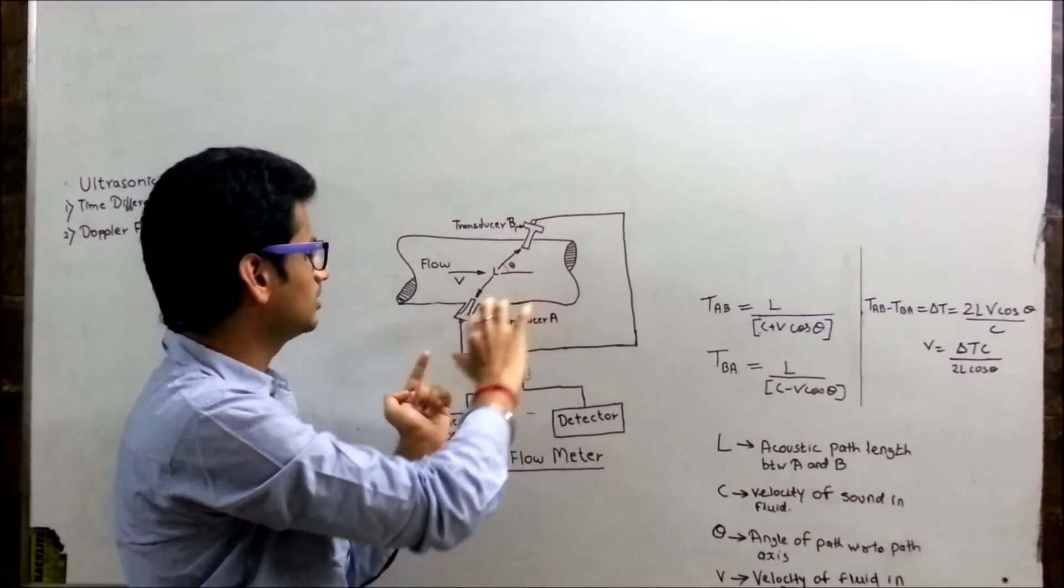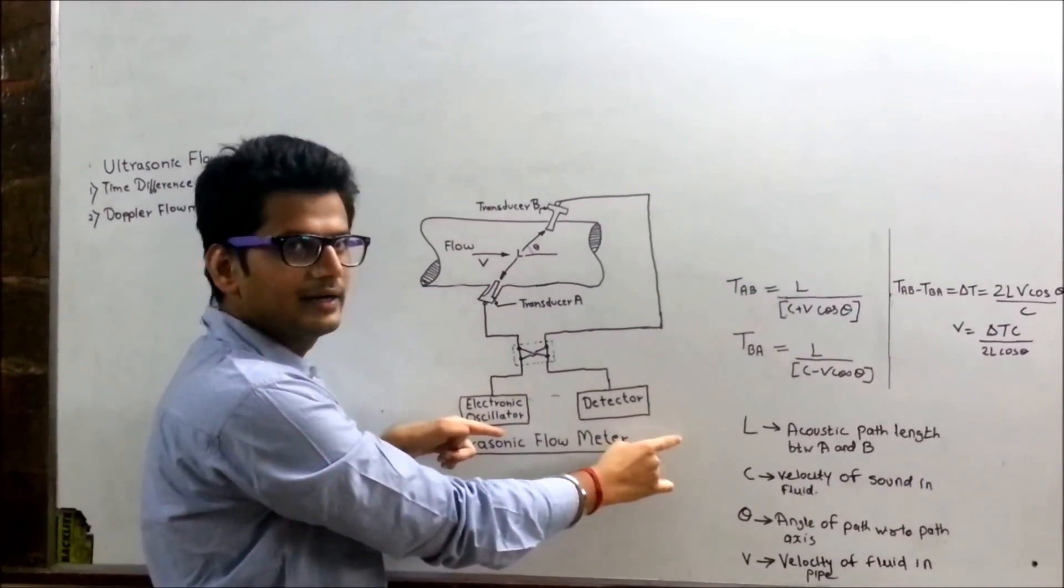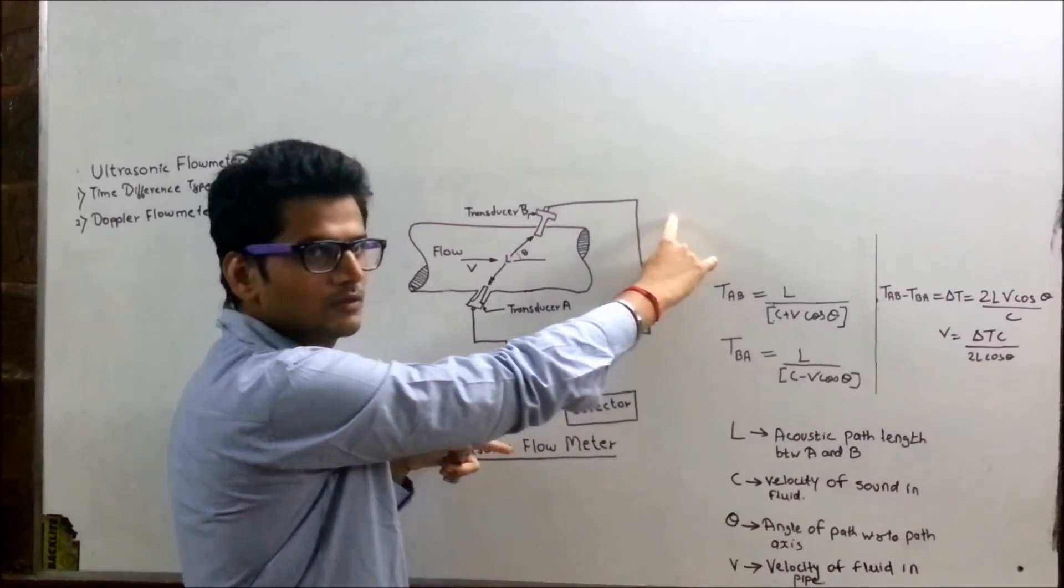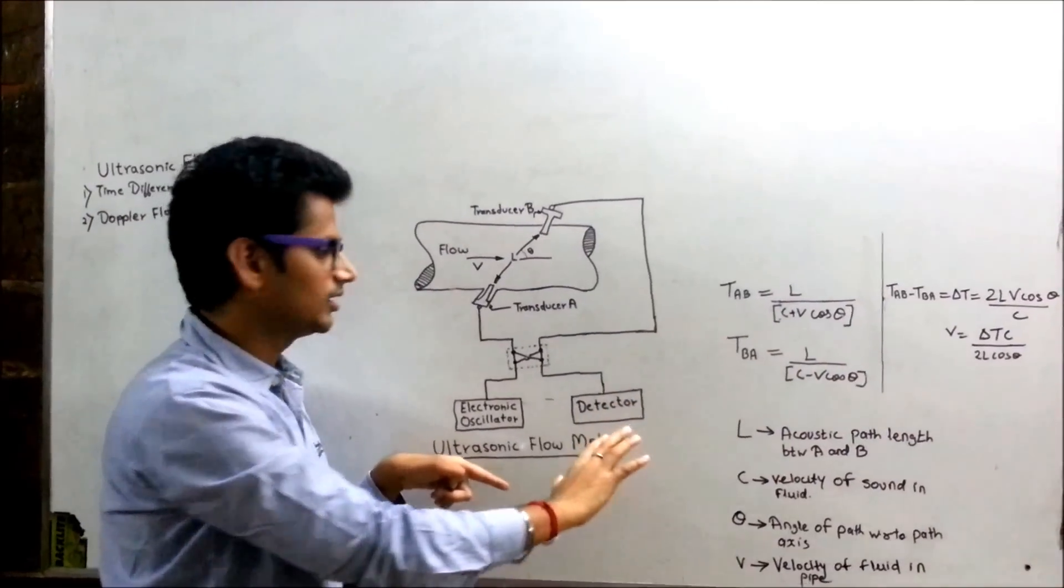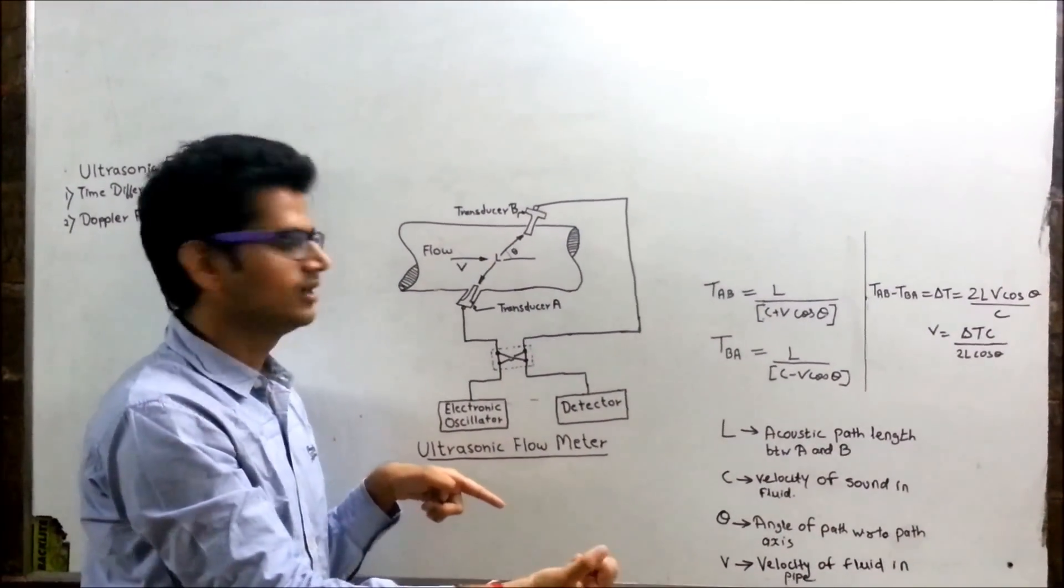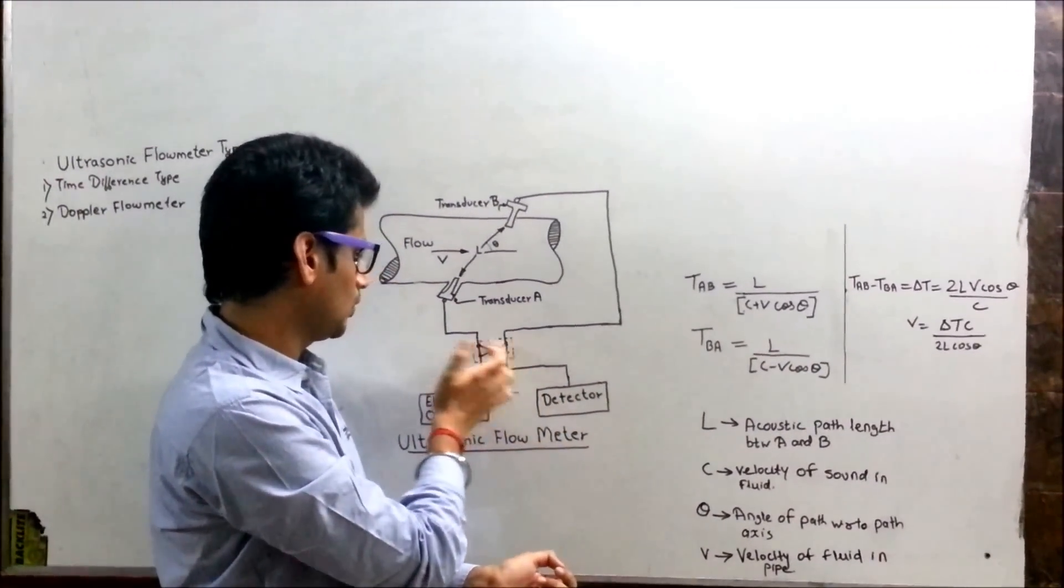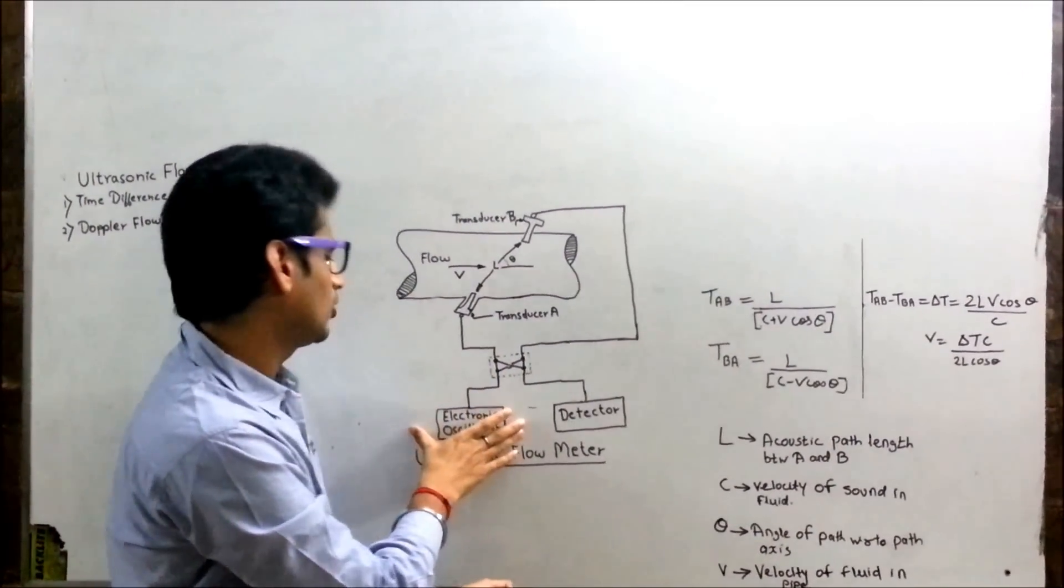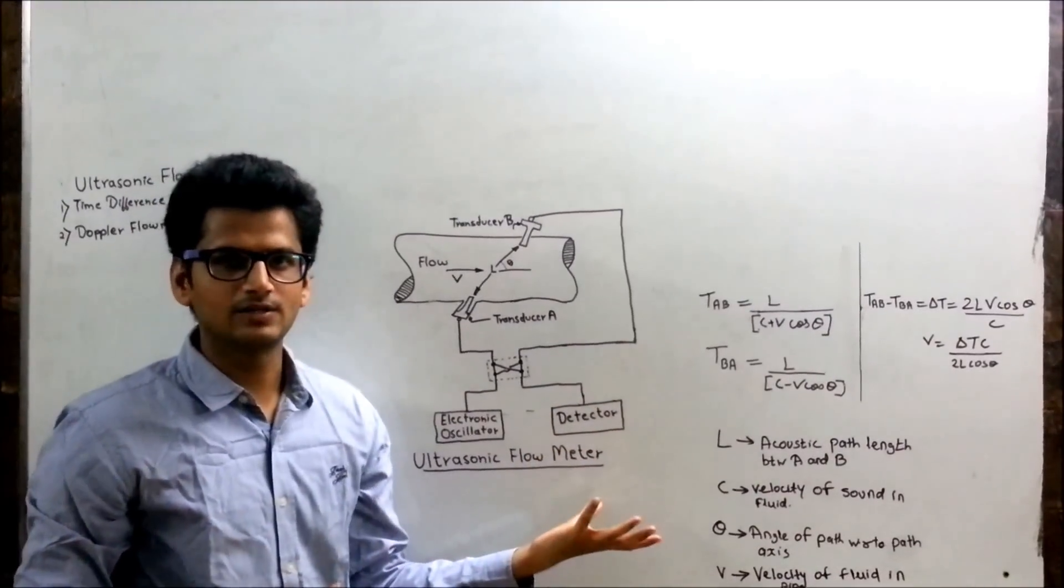As you can see, both of them are connected to electronic oscillator and detector. The signal from transducer B, which it has received, will go to detector. Detector basically does the job of just detecting the signal. Then, electronic oscillator gets the signal as it is interconnected with this. Electronic oscillator will get the signal and convert it to voltage.